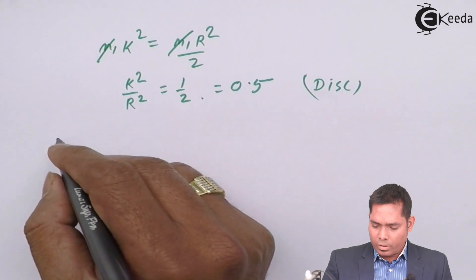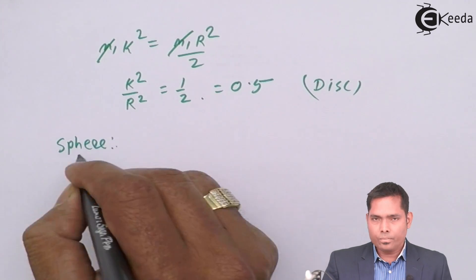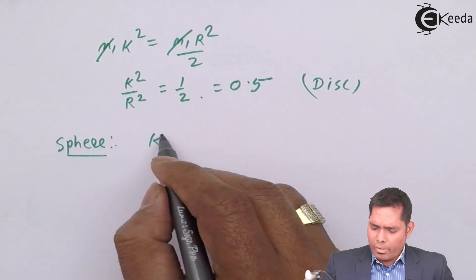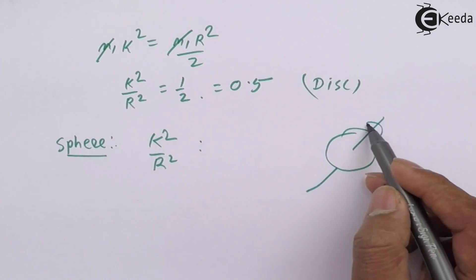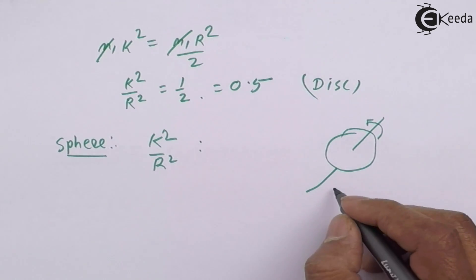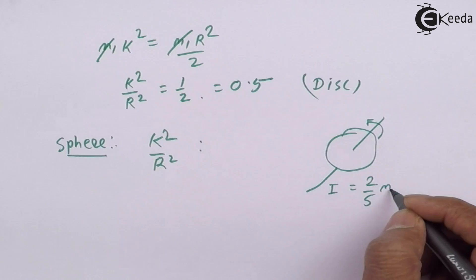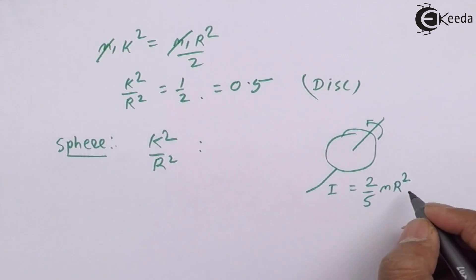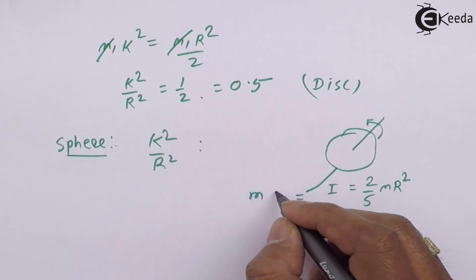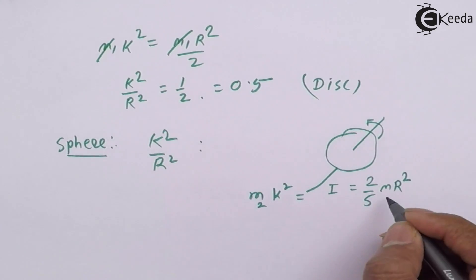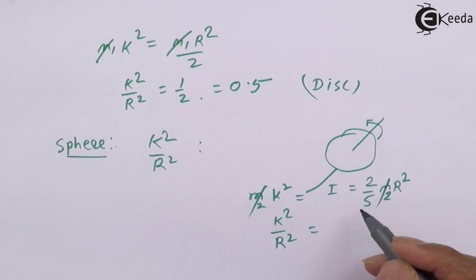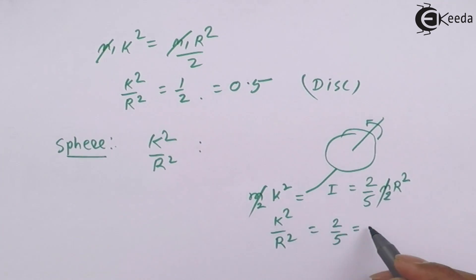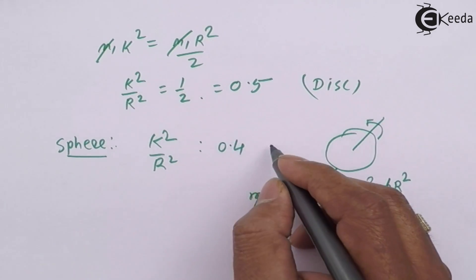For the sphere, we need to find k²/r². The moment of inertia of a sphere is I = (2/5) M2 r², which equals M2 k². Since M2 cancels out, we get k²/r² = 2/5 = 0.4 for the sphere.